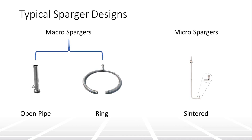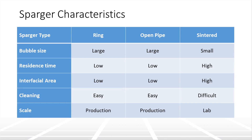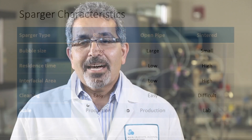Open pipe and ring spargers generate larger bubbles compared to sintered spargers. The table shows the characteristics of the various types of spargers, but generally speaking, sintered spargers are used for single-use or small-scale operations where cleaning is not a major concern. For large-scale production, ring and open-pipe spargers are more commonly used.